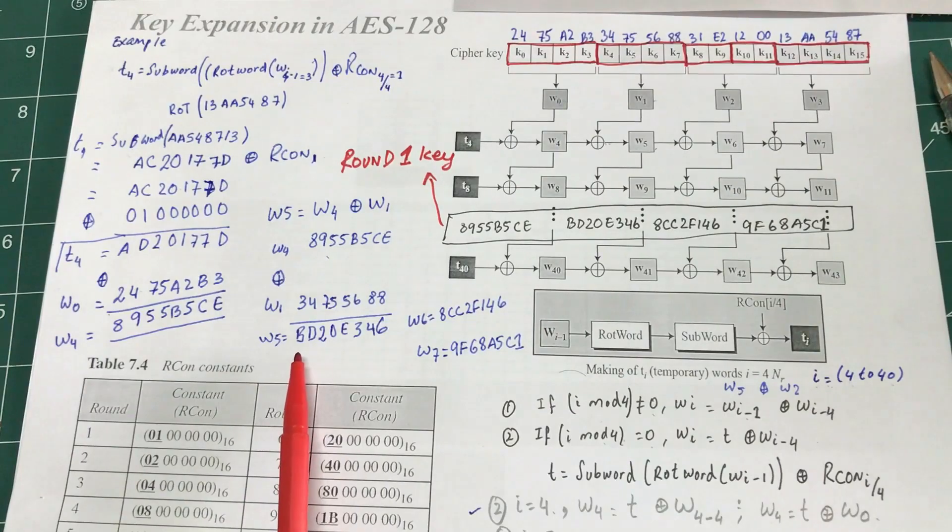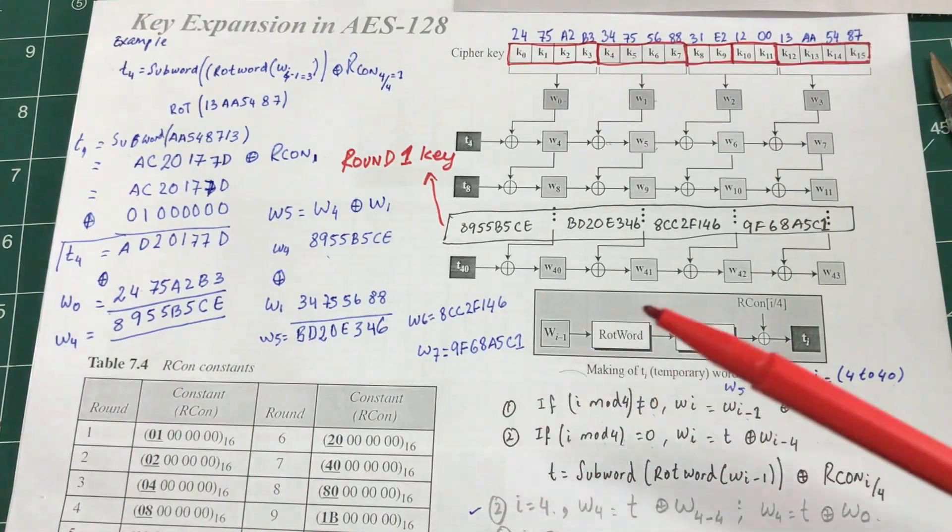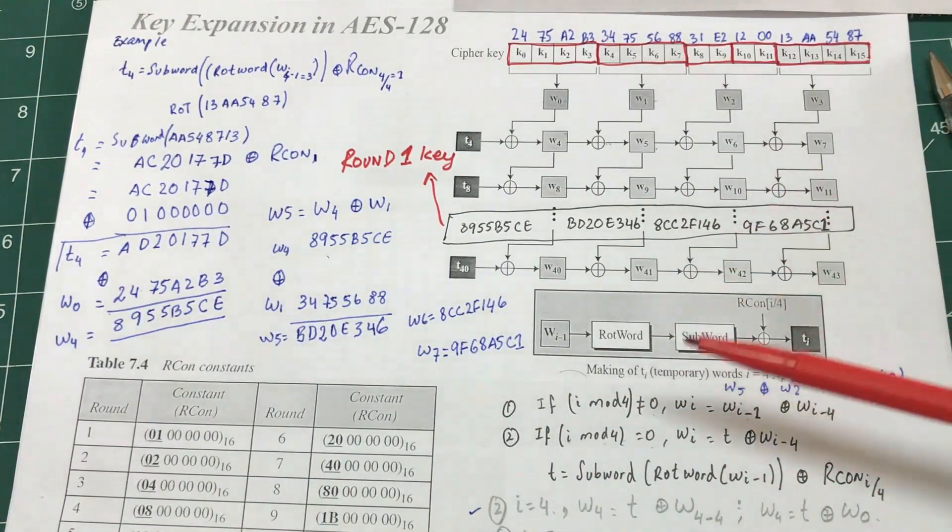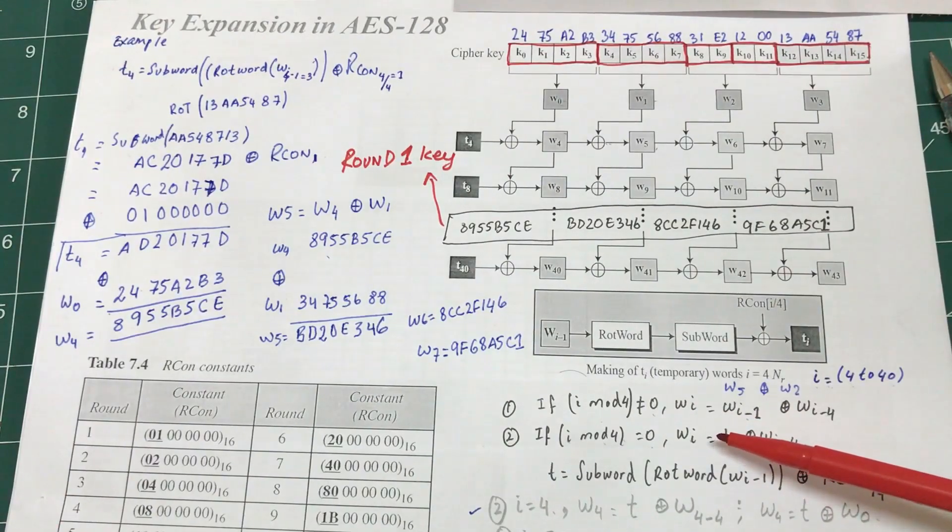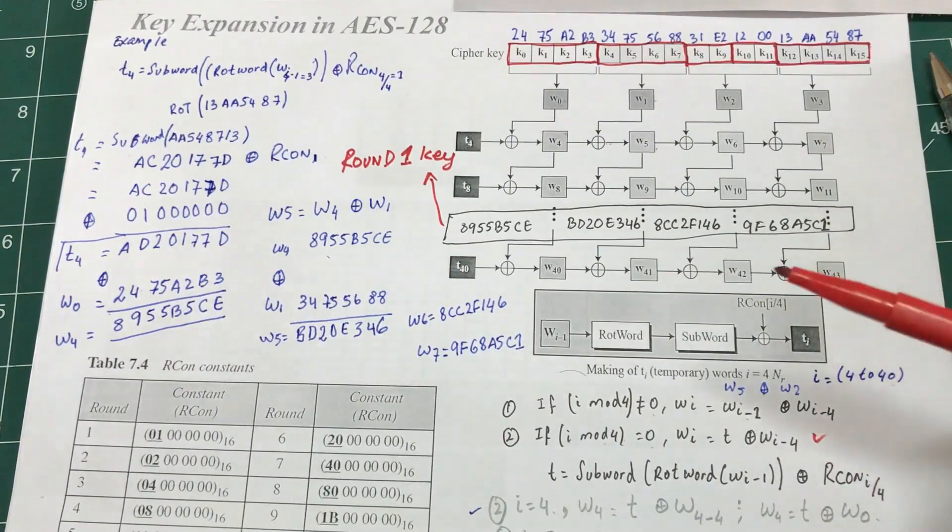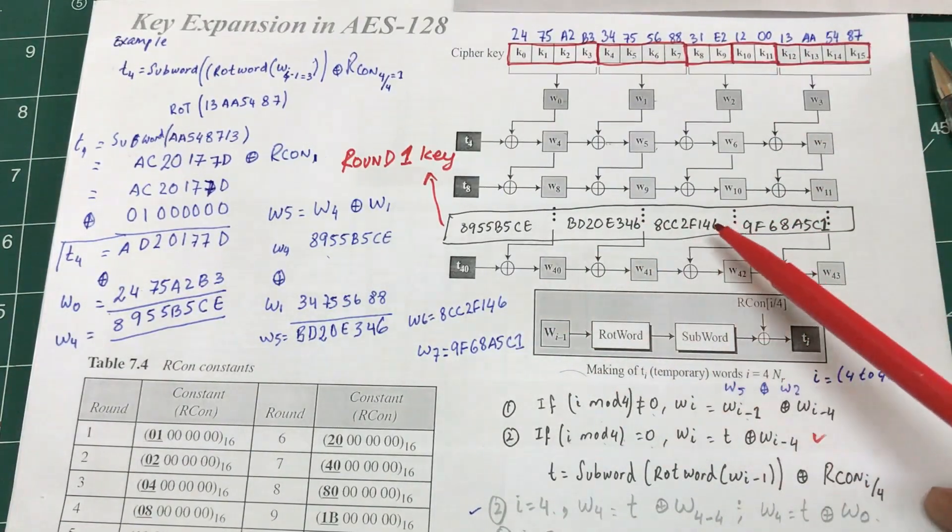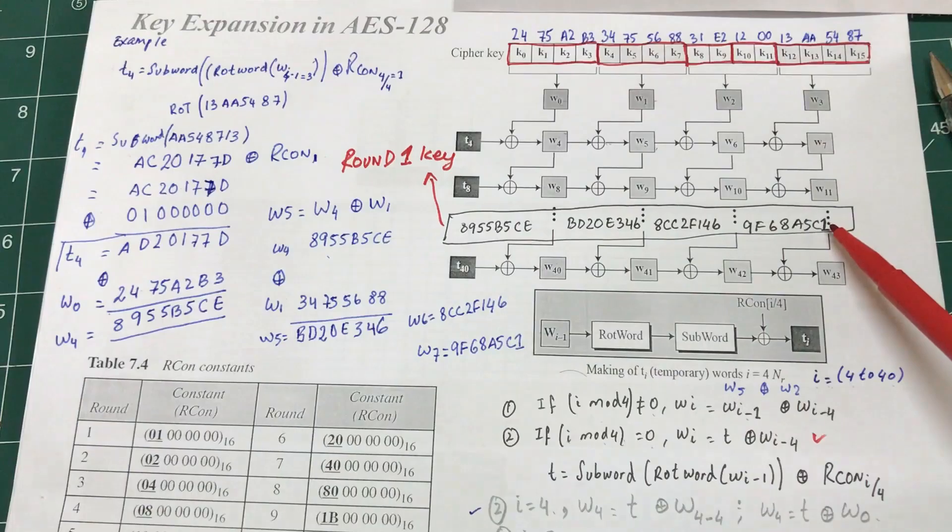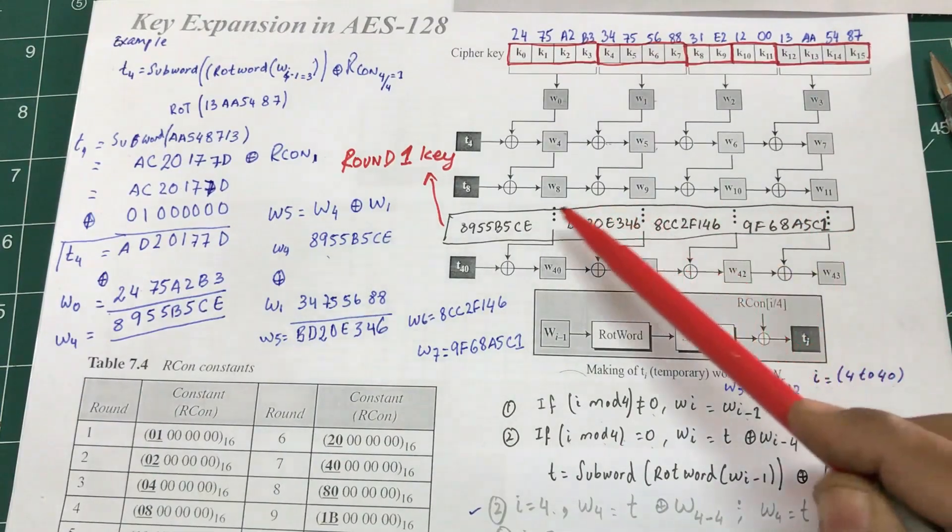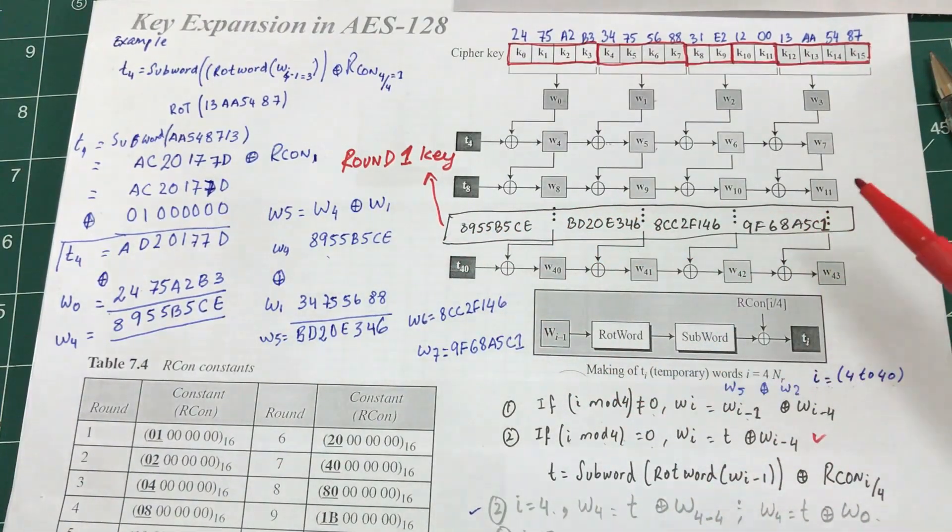And W7, just like we did it for W5. T is only required when you have multiples of four - that's the only way you will fulfill this condition, which is condition number two right here. So this is your W6 and this is the value of W7.